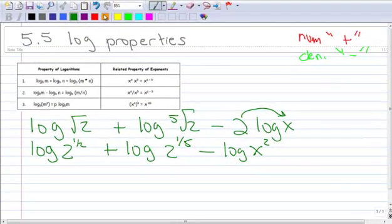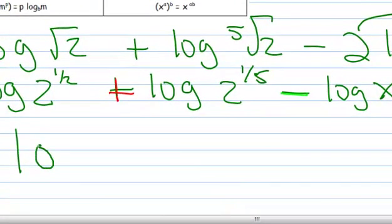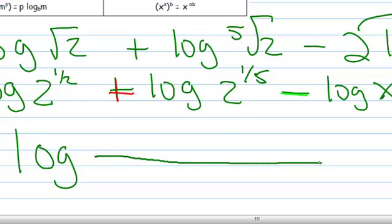So now I want to notice what stuff has a positive in front of it and I want to notice what stuff has a negative in front of it. Now I'm ready to write as one log. I'm just going to make a big fraction part here. So all the stuff that has a positive, those pieces go in the numerator. So that's the 2 to the 1/2. And remember, it gets multiplied. Now we have the 2 to the 1/5.